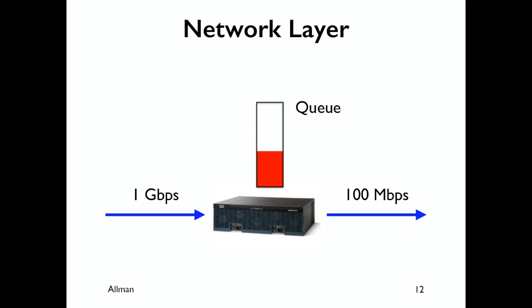The problem happens when we're receiving at a gigabit and trying to send at 100 megabit — obviously that doesn't work. If it's persistent, the router will throw a lot of stuff away. But if it's just bursty — and networks are bursty — we can fix this with a queue. We pick up a packet, put it in our pocket for a while, and when the link is ready we put it down. That adds delay to the process — when you build a queue, you build delay into the network.